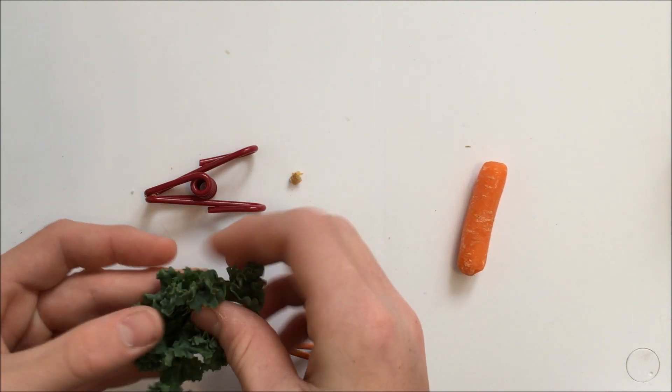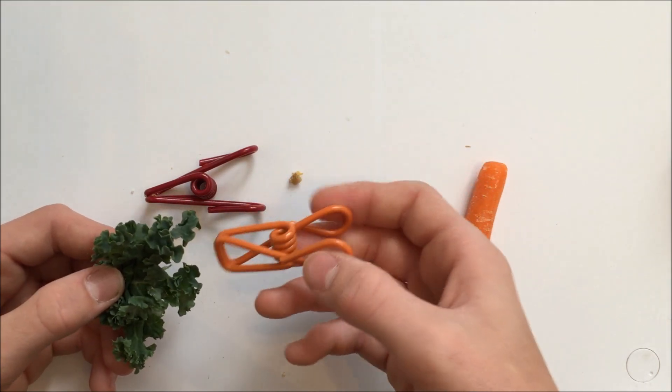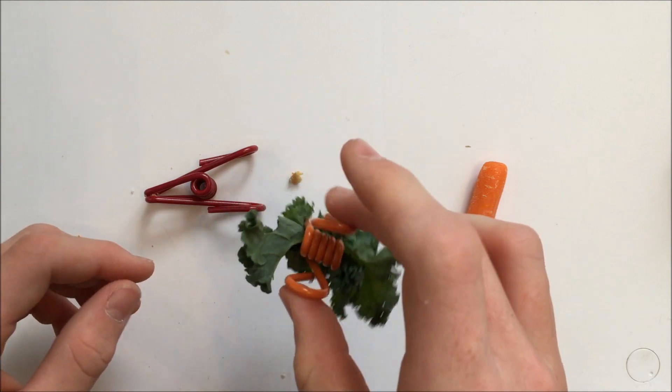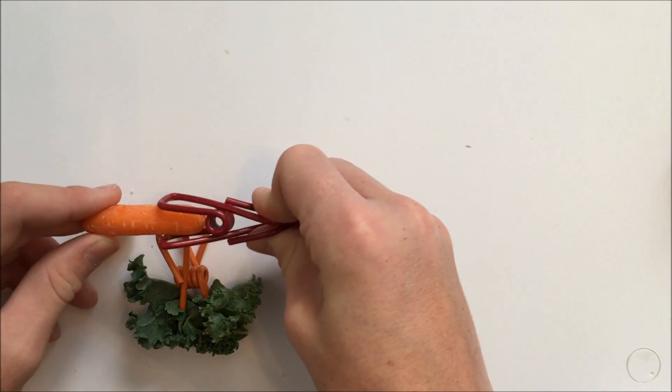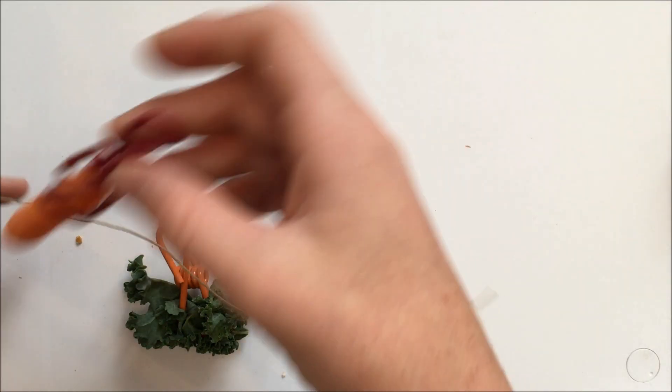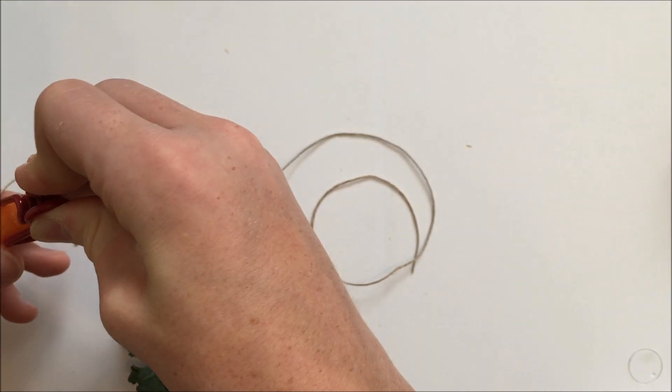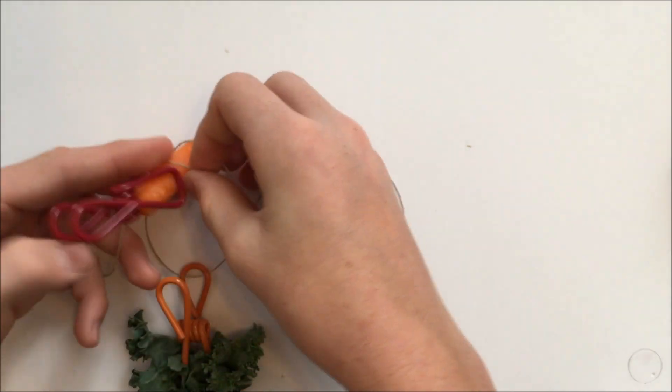Then take your vegetables and take your clip. And you could use a clothespin too. And you just want to slide your vegetable onto a clip like this. So then I'm going to do the carrot too. Now you're going to tie your string onto each side of your cage. And whenever you're ready, take your vegetable and your string and open it up a little bit. And slide your string through there.